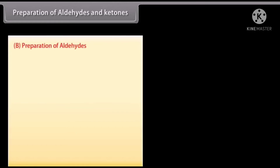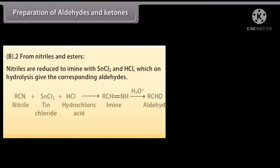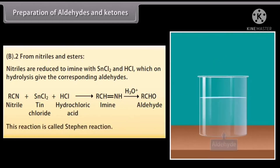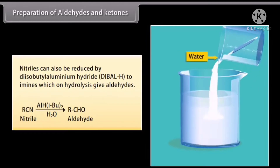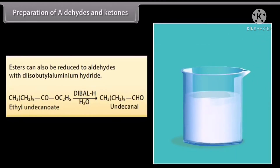Preparation of aldehydes from acyl chlorides: benzoyl chloride on catalytic reduction in the presence of palladium on barium sulfate results in the formation of benzaldehyde. From nitriles: nitriles are reduced to imines with tin chloride and hydrochloric acid, which on hydrolysis give the corresponding aldehydes — this is called the Stephen reaction. Nitriles can also be reduced by diisobutylaluminium hydride to imines, which on hydrolysis give aldehydes. Esters can also be reduced to aldehydes with diisobutylaluminium hydride.